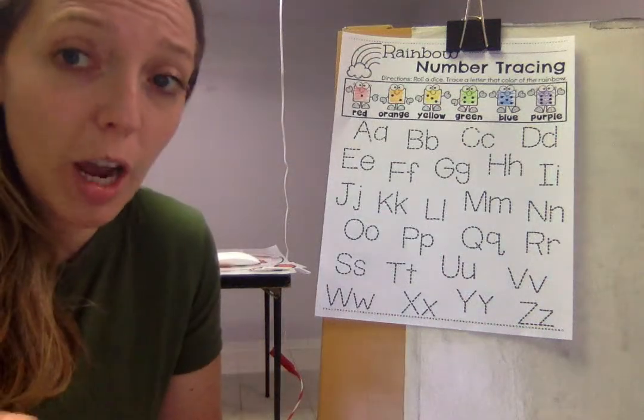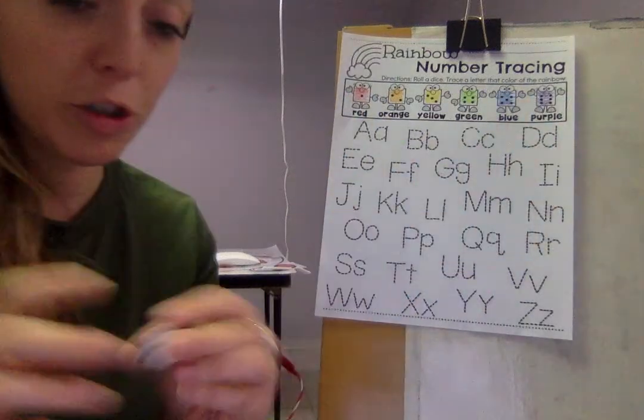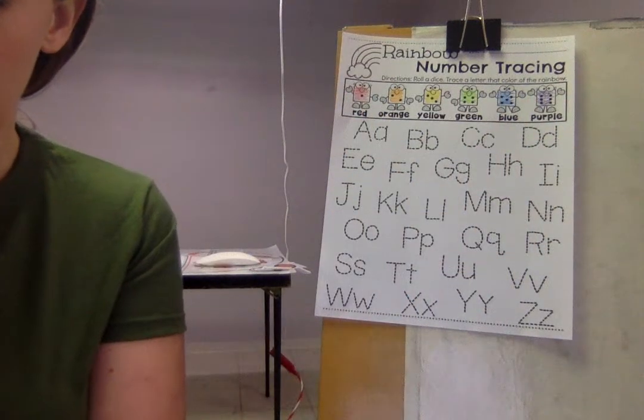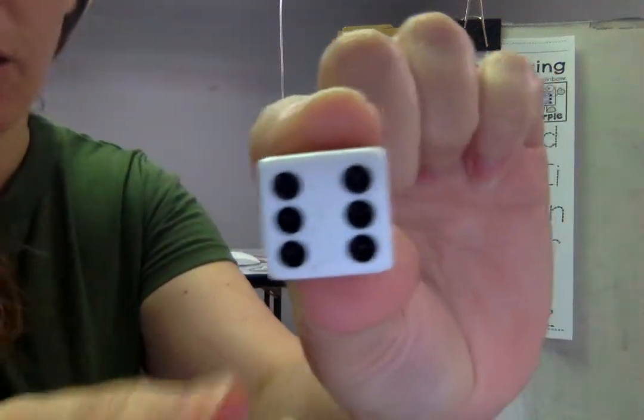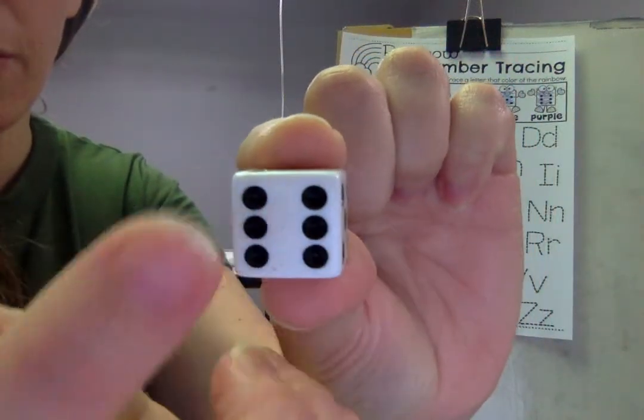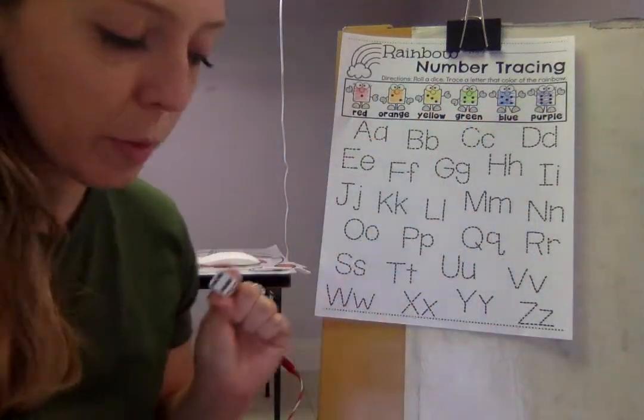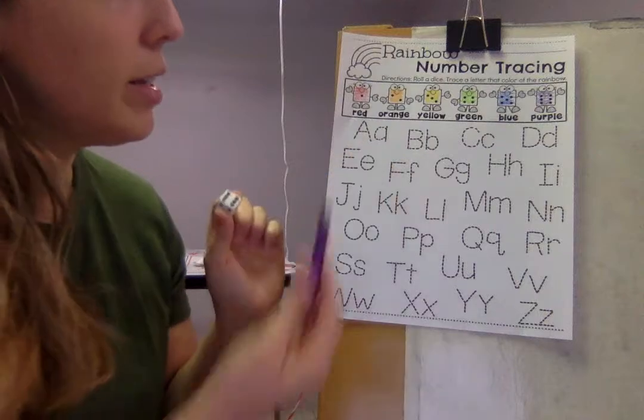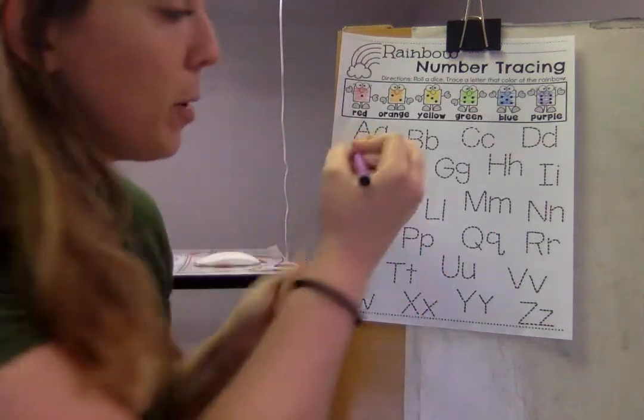So for this job you're gonna get your dice and after you've colored all your pictures you're gonna roll your dice. So mine rolled a number. Let's count. One, two, three, four, five, six. So I'm gonna go see which one has the number six. Oh it was purple. So my first one I'm going to trace my capital letter A and lowercase a purple.